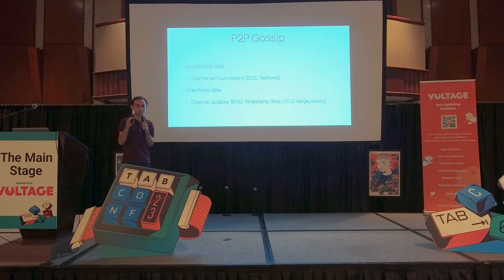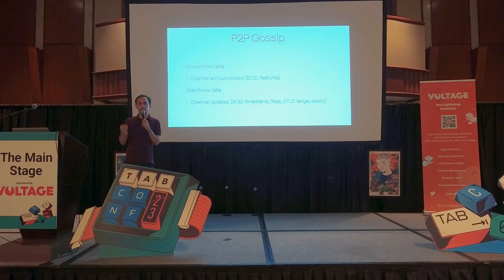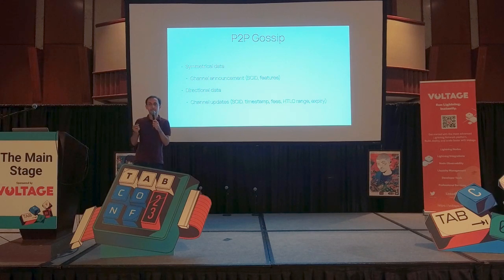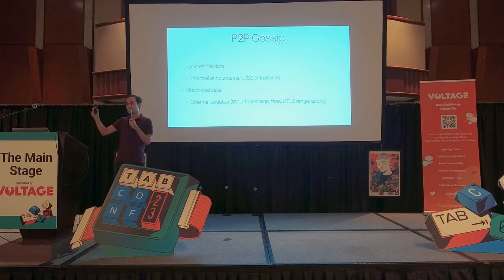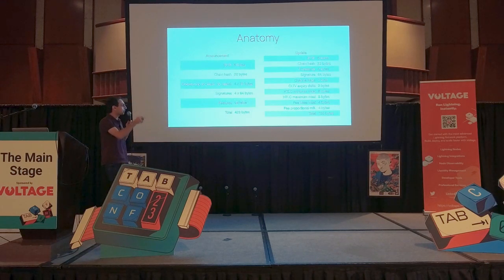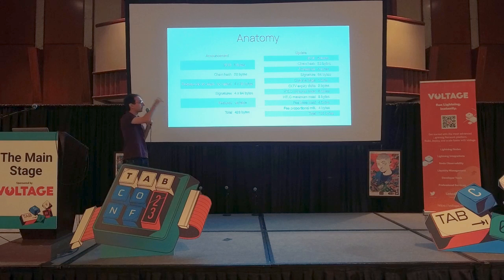As I was alluding to before, we have symmetrical data and we have asymmetrical data. Things like which nodes a channel connects — there's nothing directional about this sort of data — that's what's being transmitted in the channel announcement. But we also have directional details such as fees. A node processing inbound HTLCs may be charging a different fee than the counterparty charging for HTLCs in the opposite direction.